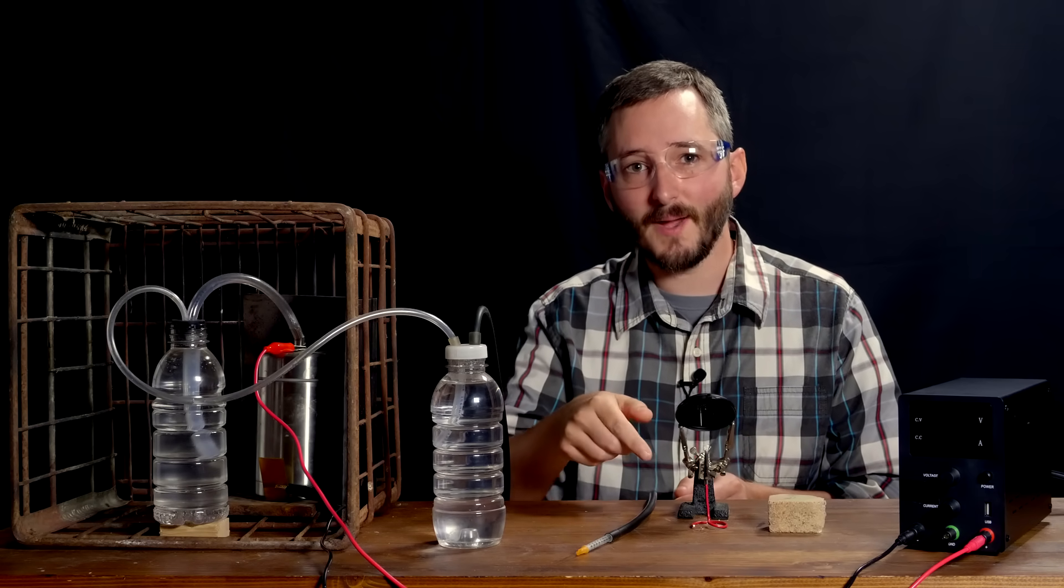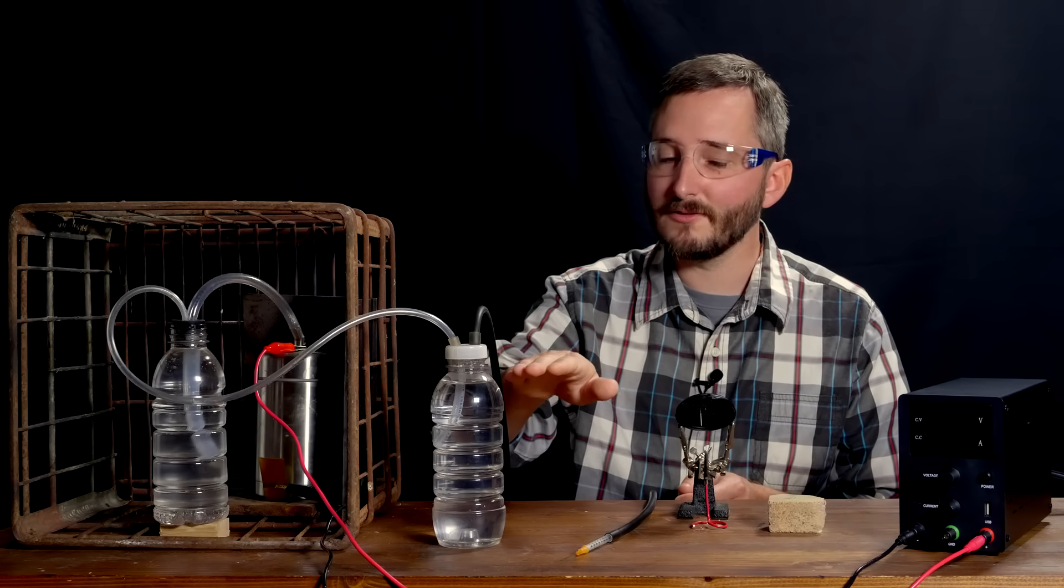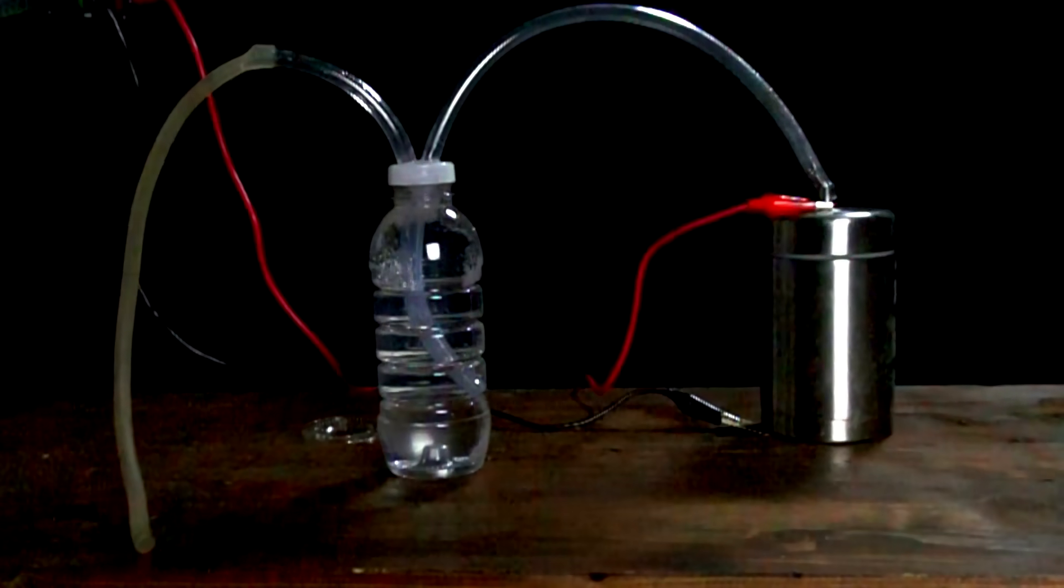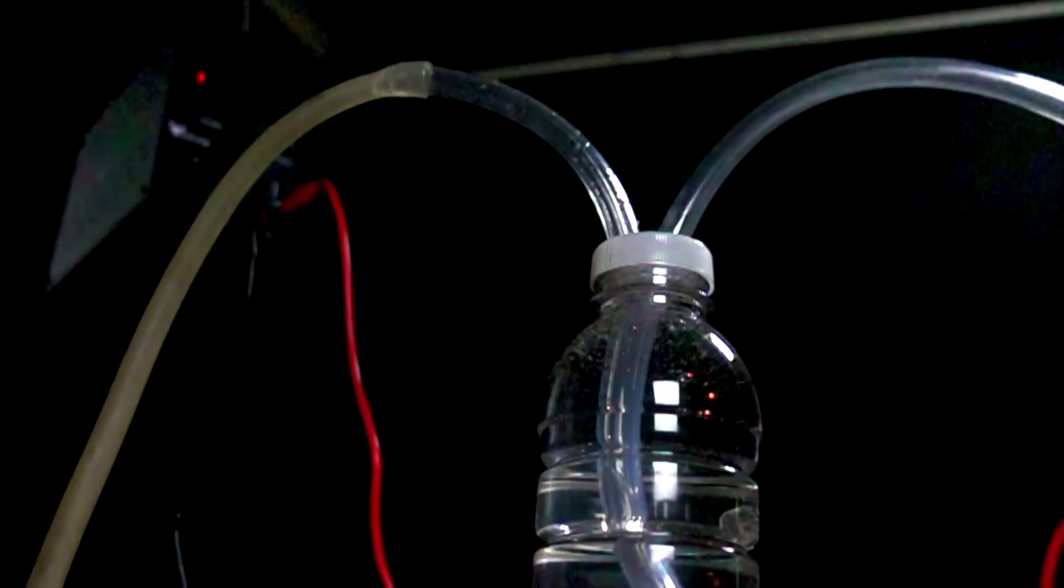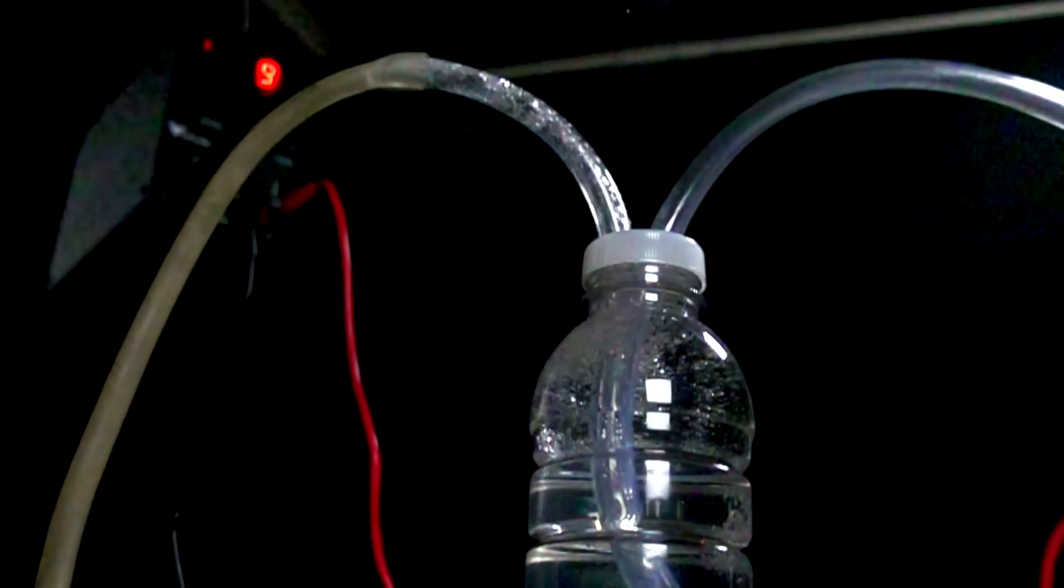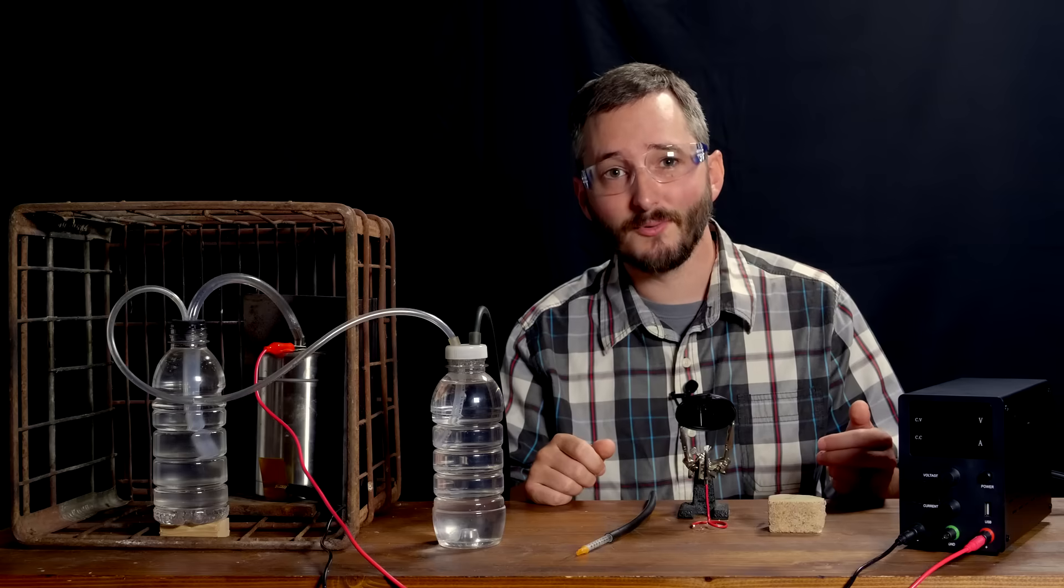When a flame travels backward, it should hit the surface of the water in these bottles, preventing it from traveling any further. If the first bottle doesn't work, I'm hoping the second one does. All that to say, this is an inherently dangerous project, not one to be played with lightly.